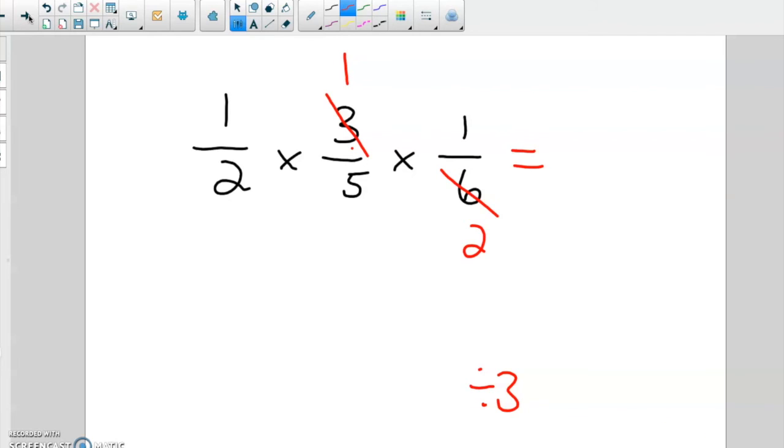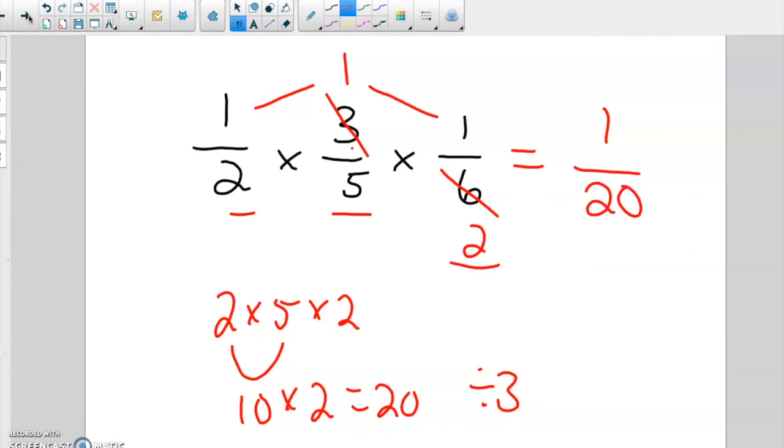So you do one times one times one times one. Bottom, you do two times five times two. Two, five, two. That's ten times two is twenty. One twentieth.